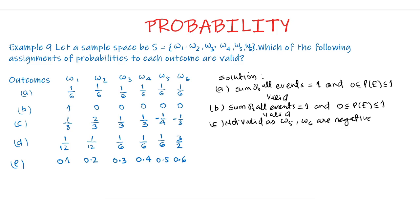For Part D, we observe that the probability of ω6 is 3/2, which is greater than 1. Since no probability can exceed 1, this assignment is not valid. P(ω6) = 3/2 > 1 is the reason it is invalid.